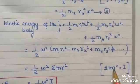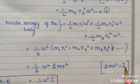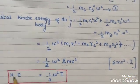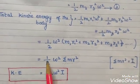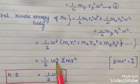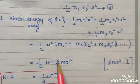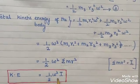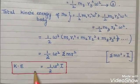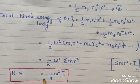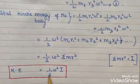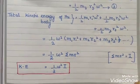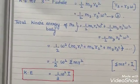Substituting, the final equation is: kinetic energy equals ½·I·omega². This is the expression for kinetic energy of a rigid body rotating about an axis.